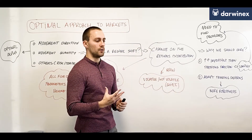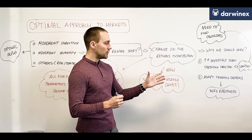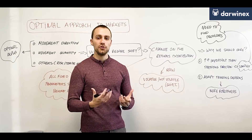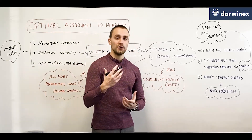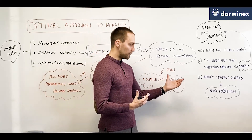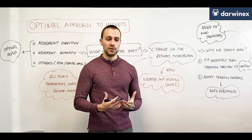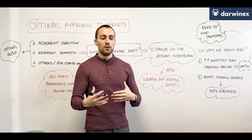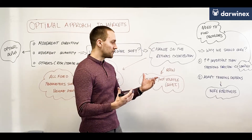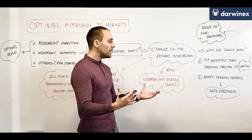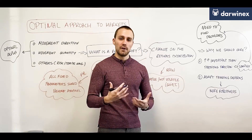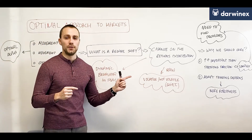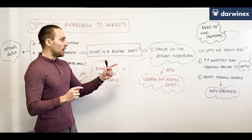Related to why we should care — it is crucial to adapt our trading decisions based on what our returns distribution is, because we want to have a robust alpha. To be robust we have to be adaptive to market conditions: able to not trade, trade less, or trade more, and similarly trade more quantity or less quantity, adapting to ever-changing market conditions.